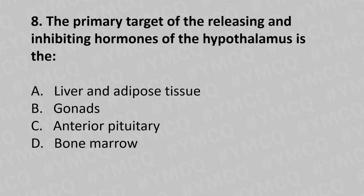Moving to our eighth question. The primary target of releasing and inhibiting hormones of the hypothalamus is the: Option A: liver and adipose tissue. Option B: gonads. Option C: anterior pituitary. Option D: bone marrow. And the answer is Option C: anterior pituitary.